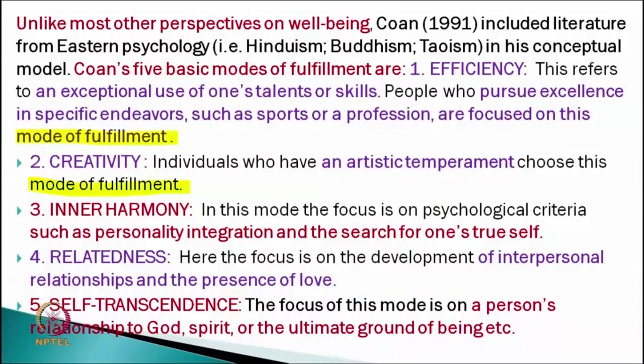Along with these three factors, Korn borrowed two specifically from Asian or Eastern cultures: self-transcendence and inner harmony. With the Asian model, inner harmony focuses on psychological criteria such as personality integration and the search for one's true self. On the other hand, self-transcendence focuses on a person's relationship to God, spirit, or the ultimate ground of being — when we have connection with something unobservable like spirit, soul, or God. By combining all five factors he proposed his well-being theory.